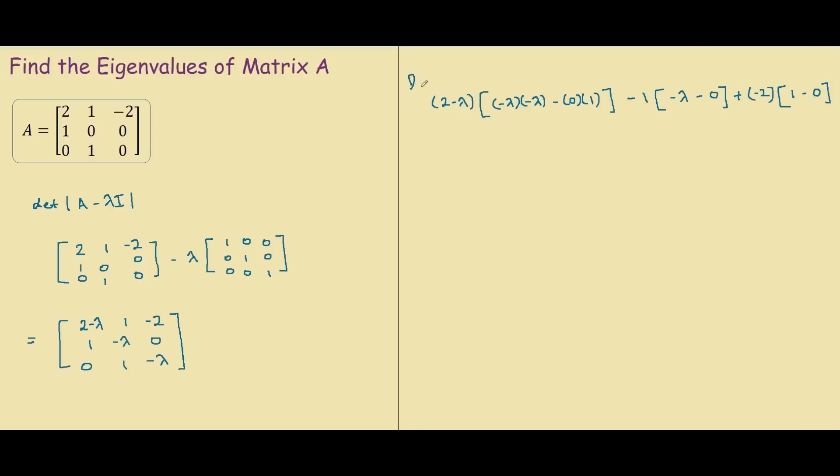So this is the determinant of A minus lambda I. And if we simplify this down, we have 2 minus lambda. Inside the square brackets, we only have lambda squared. Minus 1 times negative lambda is plus lambda. And then plus negative 2 times 1 is negative 2.